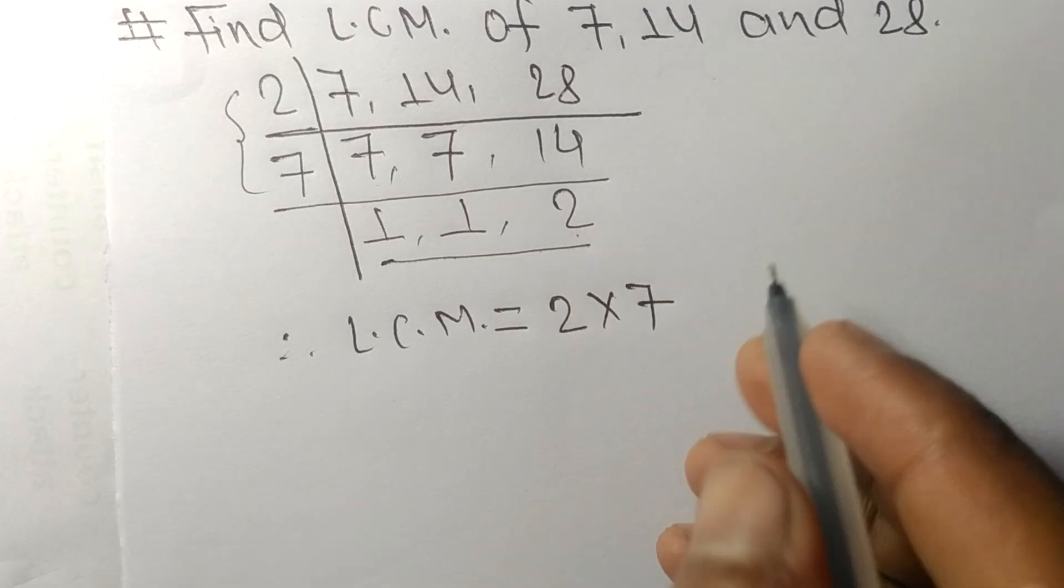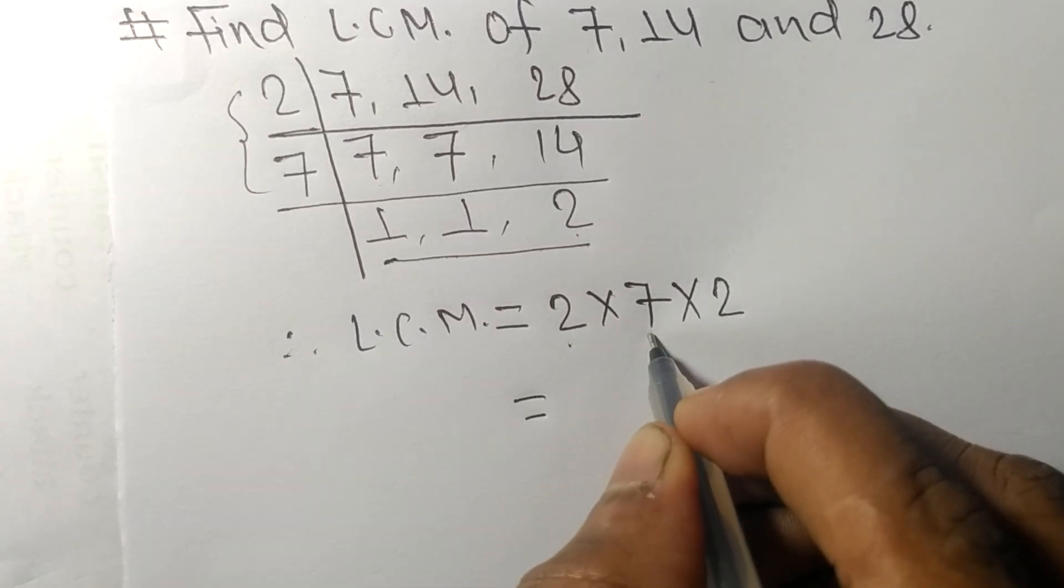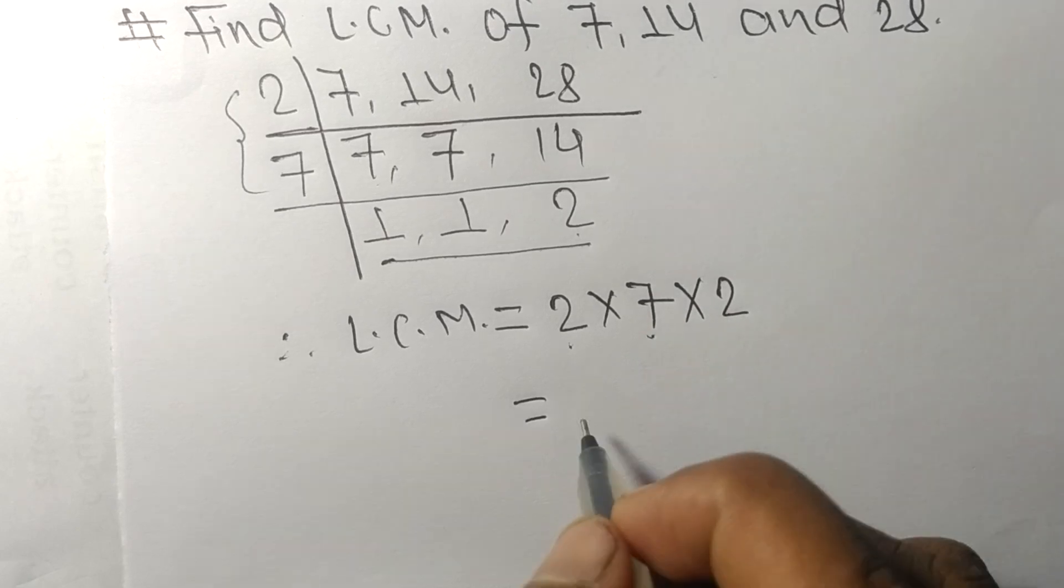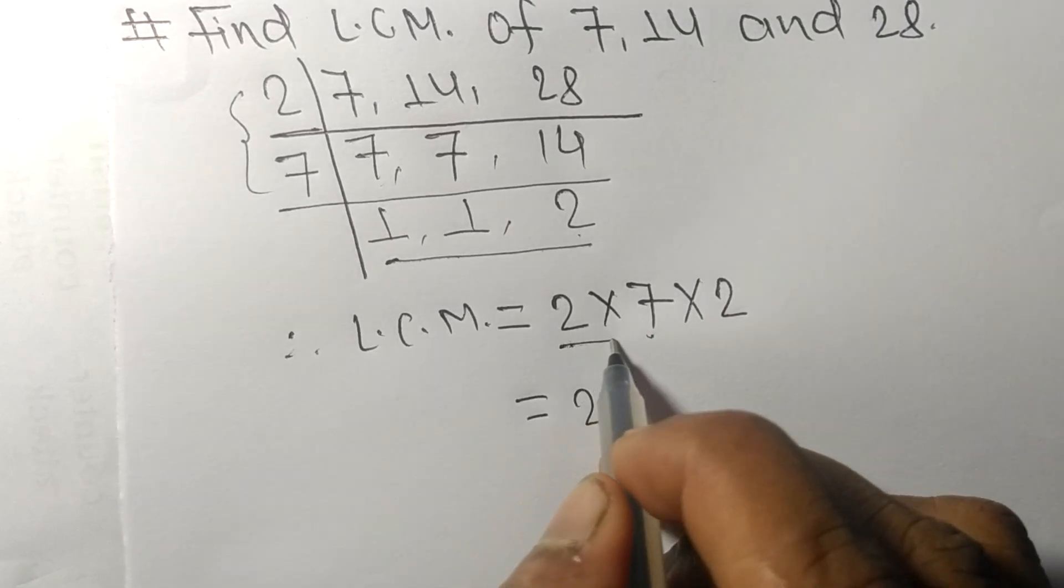So 2 times 7 equals 14, 14 times 2 equals 28. By multiplying all these numbers we get 28.